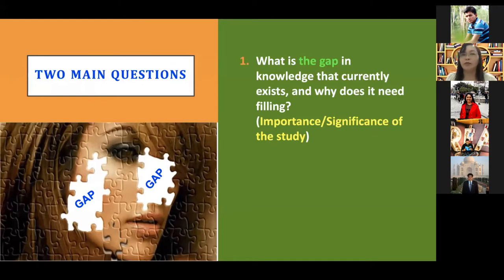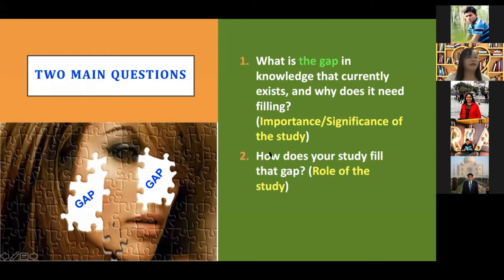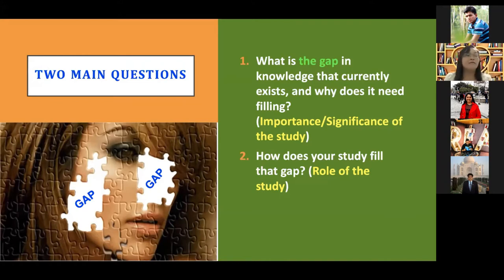There are two questions you need to answer to ensure your paper is worth publishing. First: what is missing in the knowledge of the topic you are planning to work on, and why does it need filling? If you can answer this, it means you know the significance and contribution of your research. Second: how does your study fill that gap? In answering this, you position yourself and your research in relation to other researchers and studies on the topic. If you cannot answer these two questions, the journal editor will not accept your paper.